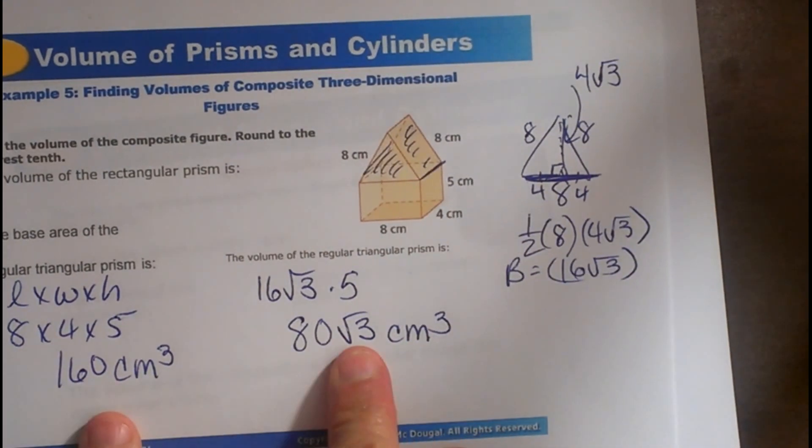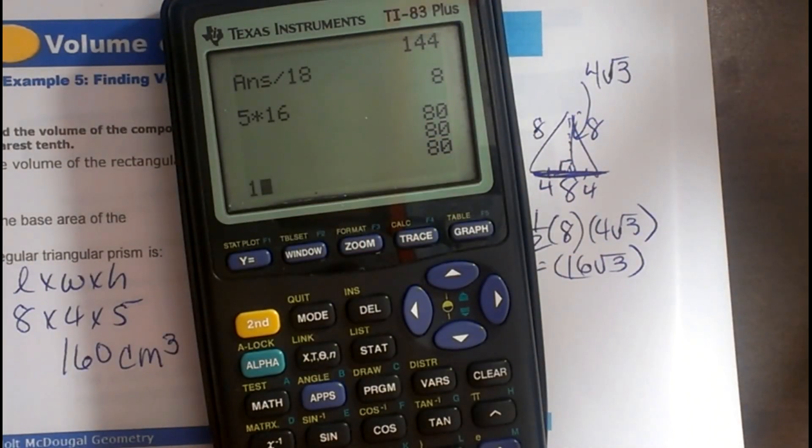Now, here are my two volumes. I'm putting them together, so I'm going to add them. Now, can I add these together? Not in the form they're in, so there's your answer in exact form. Now, if you have a decimal form, you can go ahead and type it out as 160 plus 80,